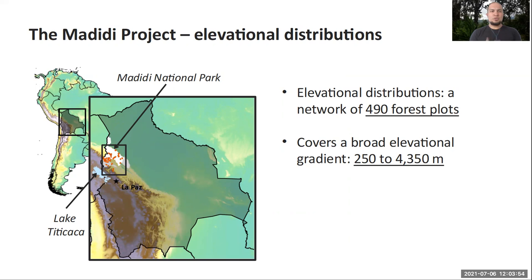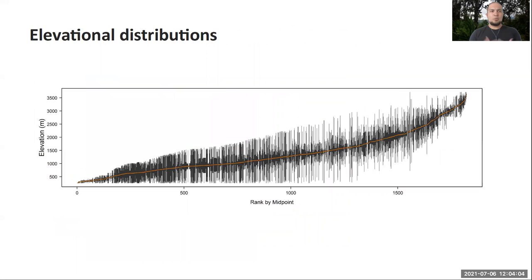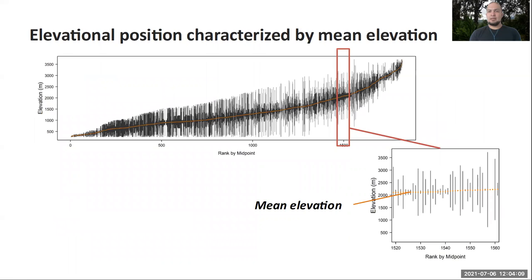To do this, we're using data from the Madidi project, which has a large network of forest plots that go from the lowland Amazonian forests all the way to the tree line. Using this data, we can characterize the elevational distributions of the species. For example, by connecting the lowest and highest point of distribution for a species, we can create an elevation range.